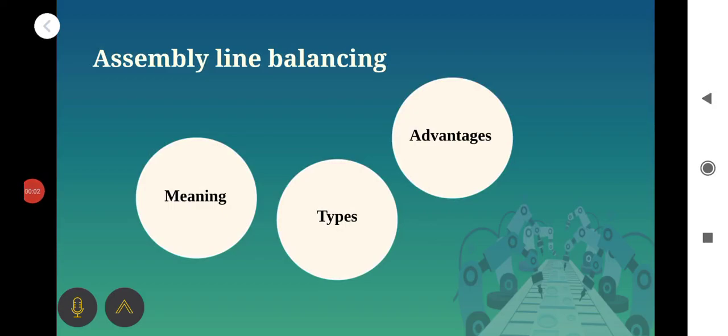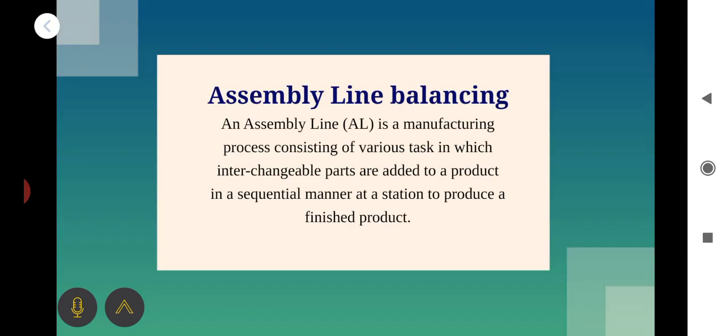Good morning, my dear students. Today we would like to discuss the last part of our second module, Assembly Line Balancing. Assembly Line Balancing, or ALB, is a manufacturing process consisting of various tasks in which interchangeable parts are added to a product in a sequential manner at a station to produce a finished product.